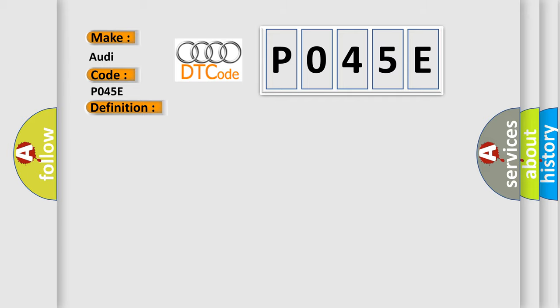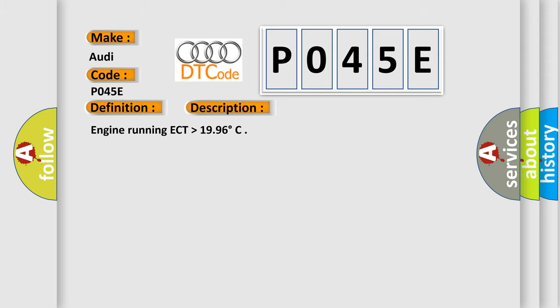And now this is a short description of this DTC code: Engine running, ECT higher than 19.96 degrees.